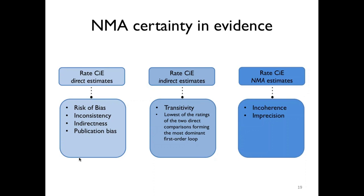The process starts with assessing the certainty for the direct estimates. In this first step, you need to assess four GRADE domains — risk of bias, inconsistency, indirectness, and publication bias — using the same approach that is applicable for intervention studies.